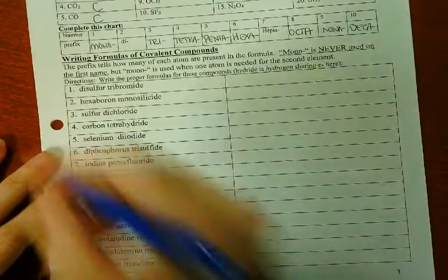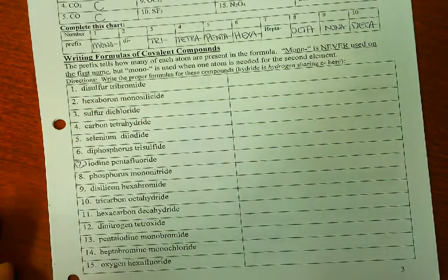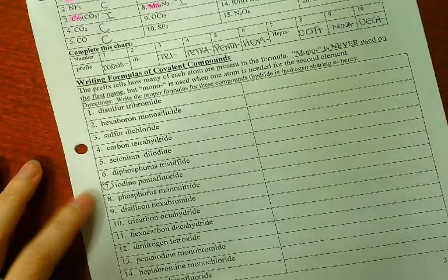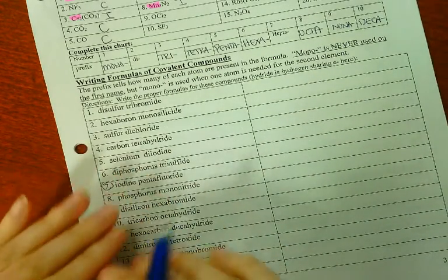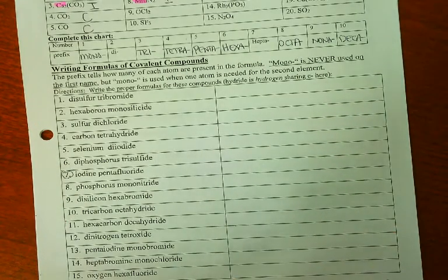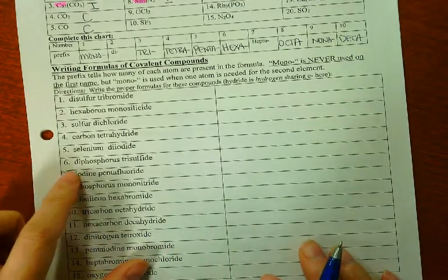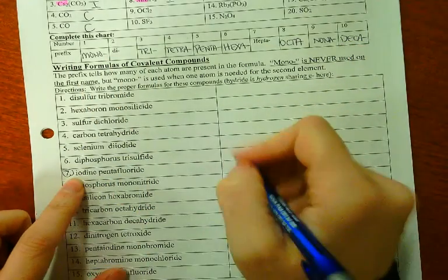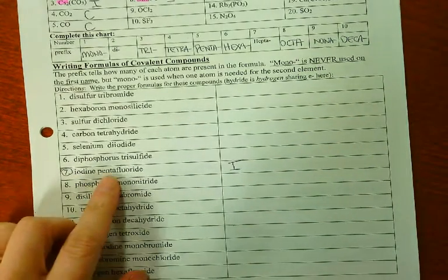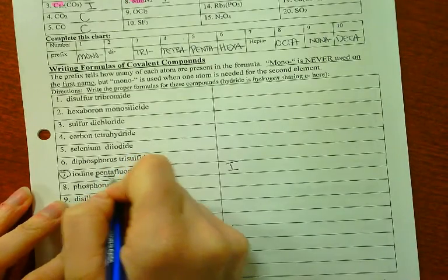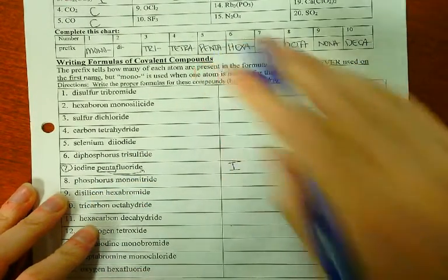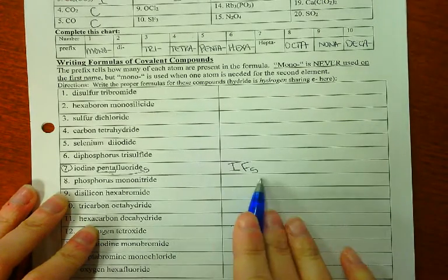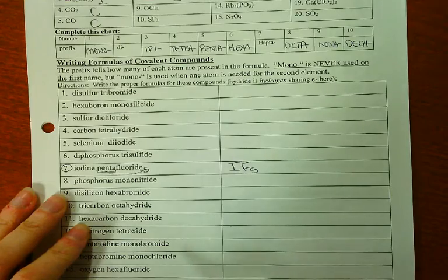Now naming covalent compounds. We're going to start at number 7, iodine pentafluoride. When we are naming, we take the prefixes out front and turn them into subscripts behind. There's no crisscross, no reduce, no erase, nothing like that. It's just the letters out front become numbers behind. Iodine, there's nothing written out front, which means there's only one iodine. Penta becomes the number 5. Fluoride is fluorine, so IF5.